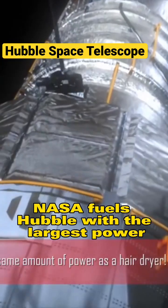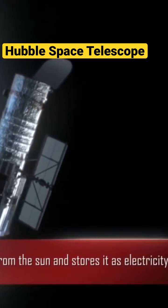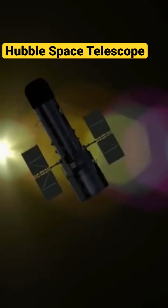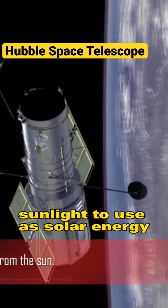NASA fuels Hubble with the largest power source we know, the sun. Two large solar panels capture sunlight to use as solar energy.